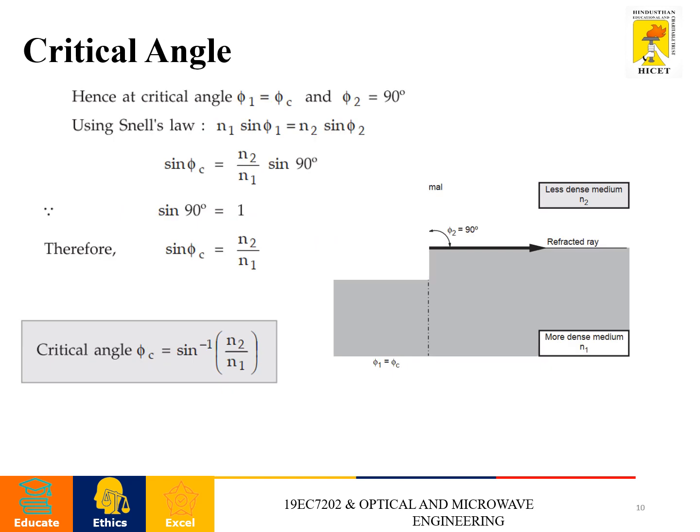Hence at critical angle, theta 1 equals theta C and theta 2 equals 90 degrees. Using Snell's law, we can define N1 sin theta 1 equals N2 sin theta 2. So, sin theta C equals N2 divided by N1 times sin 90 degrees. We know the value of sin 90 degrees equals 1. Therefore, sin theta C equals N2 divided by N1. In general, critical angle can be defined as theta C equals sin inverse of N2 divided by N1.